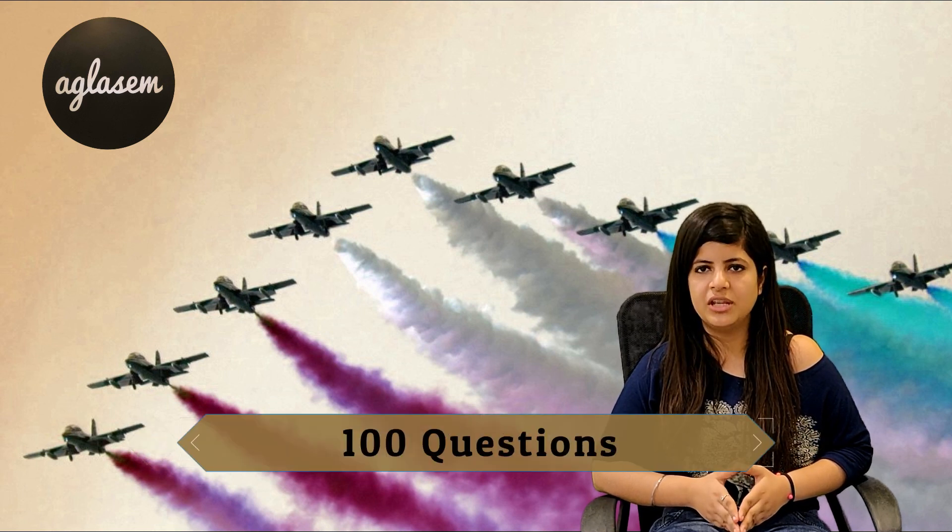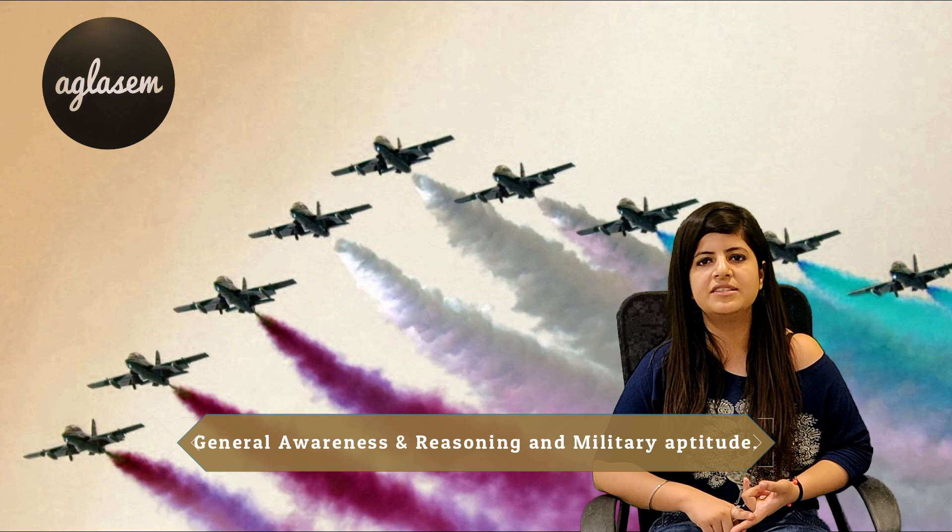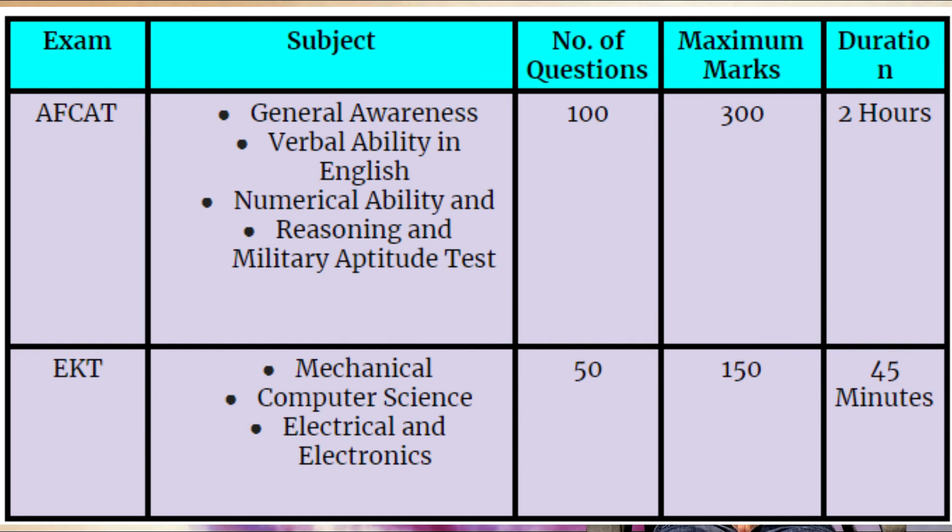Exam pattern: the FCAT 2018 exam is 2 hours long; candidates are usually asked to arrive 2 hours prior to the exam for formalities. It contains 100 questions. Each correct answer gains the candidate 3 marks, and each wrong answer deducts 1 mark. It contains 4 sections: verbal ability, numerical ability, general awareness, and reasoning with military aptitude. The exam is a computer-based test and answers have to be submitted online on the system allotted at the center. Candidates can check the full pattern of FCAT as well as EKT from the table on your screen.